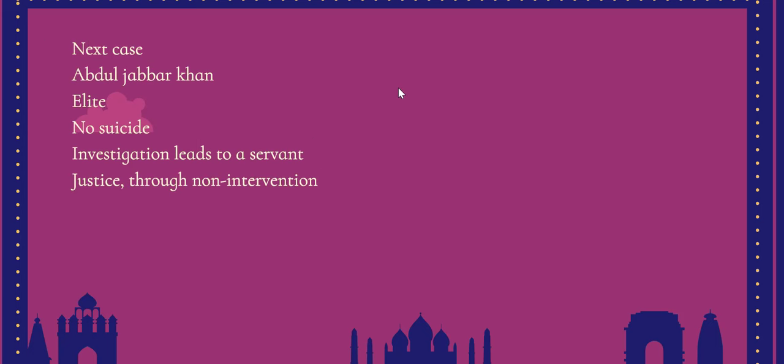The next case is the killing of Abdul Jabbar, who is found dead in a hammam that he owned. As Muzaffar Jung investigates, people believe it is suicide, but the circumstantial evidence convinces him it is actually murder. Muzaffar Jung also concludes that Jabbar's family would not benefit from his death because of a legal reason — the money Abdul Jabbar owned would not be inherited by his family.